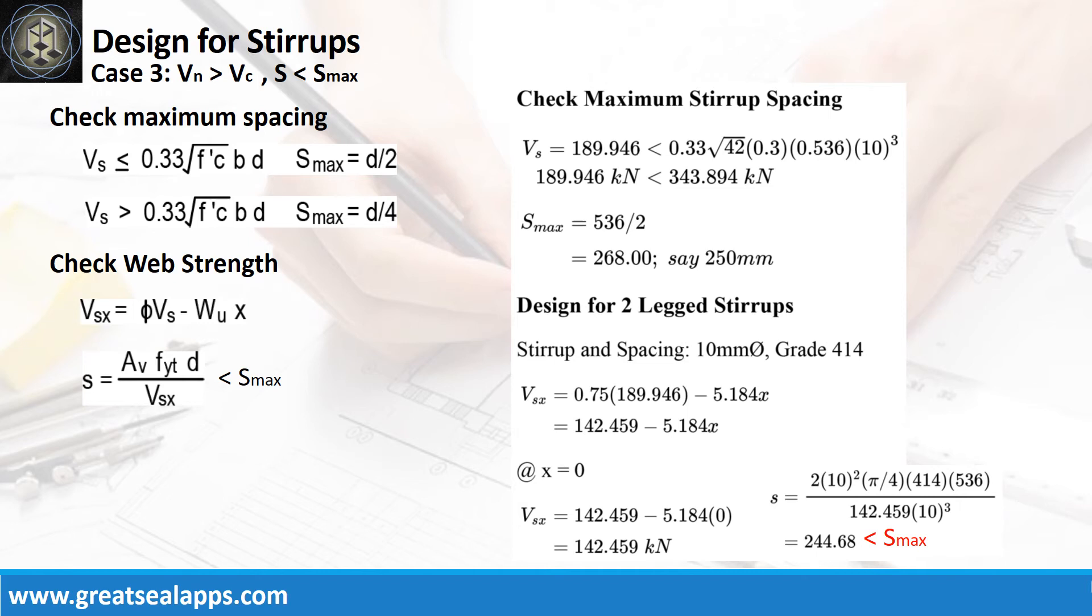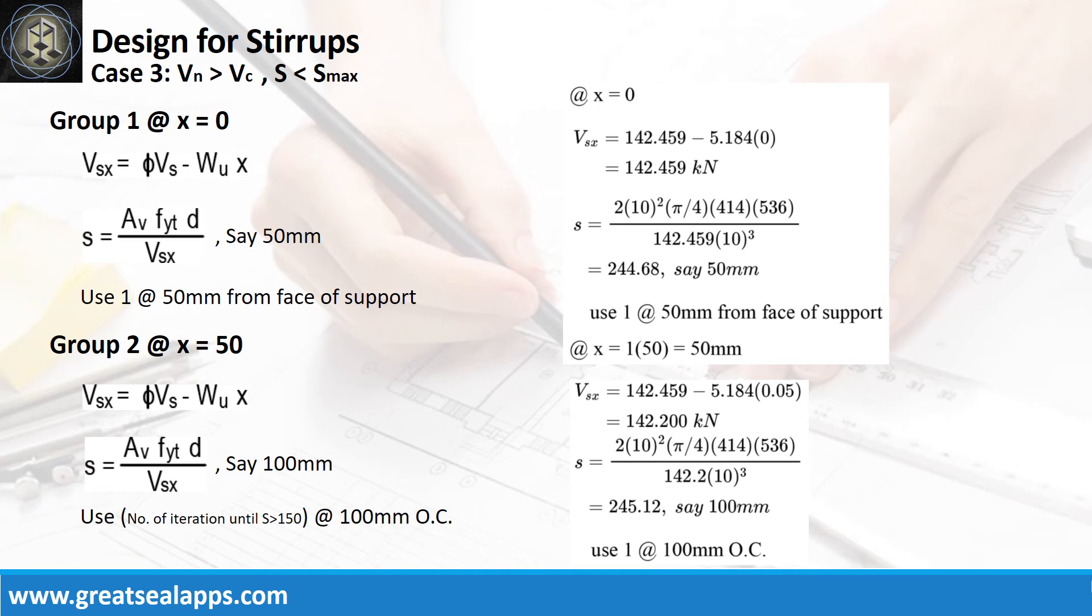The web strength at face of support is 142.459 kN, with initial spacing at 244.68 millimeters, less than 250 millimeters. For group 1 at x equals 0, the web strength is 142.459 kN, with spacing at 244.68 millimeters, use 1 at 50 millimeters.